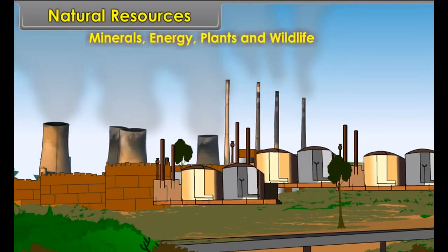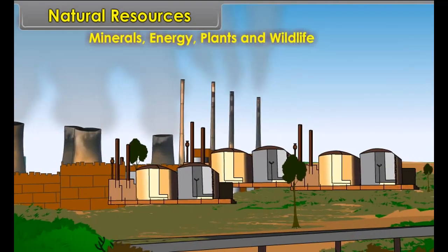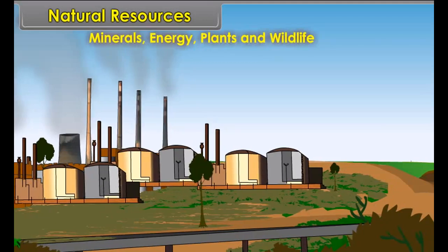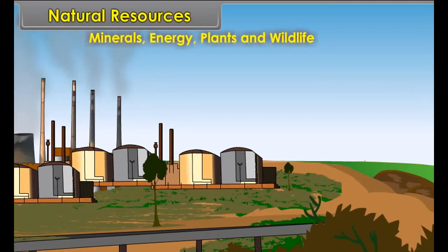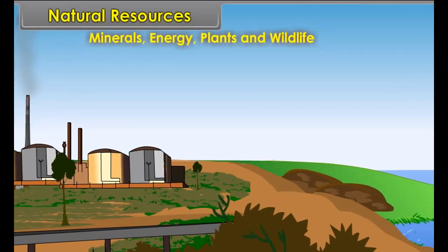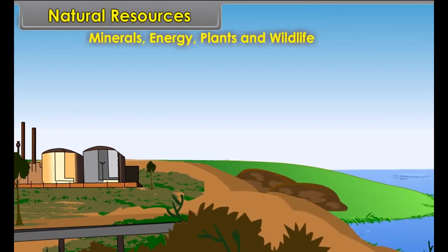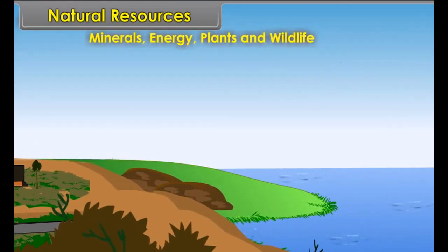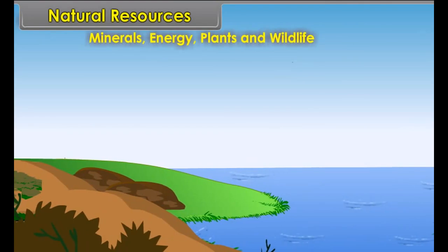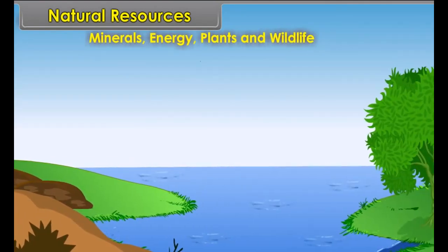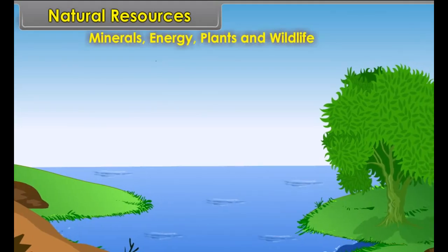Minerals and power resources are important natural resources which provide the basis for industrial development of a country. The natural growth of all types of plant life is termed as natural vegetation. The vegetation of different parts of the world is affected by the amount of sunlight and rainfall.